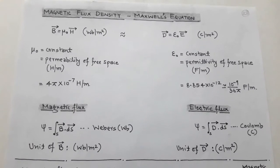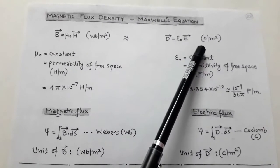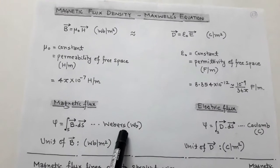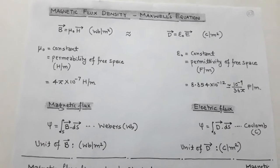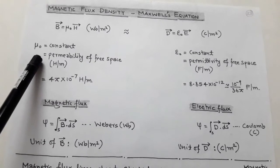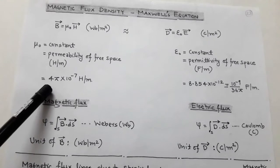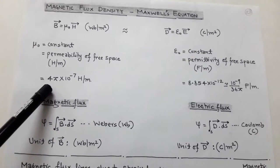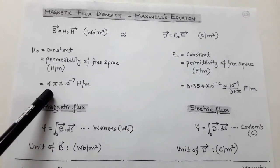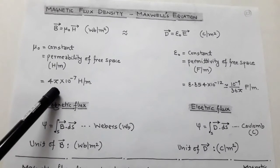In the case of electric flux density, the unit is coulomb per meter square, while in magnetic flux density, the unit is Weber per meter square — where Weber is the unit of magnetic flux. The constant μ₀ is called the permeability of free space. In free space, μ₀ equals 4π × 10⁻⁷ henry per meter, and we use this value in the case of free space.